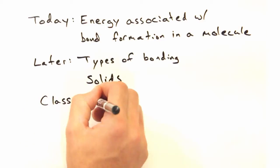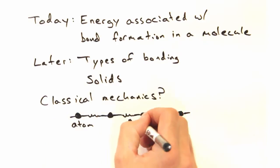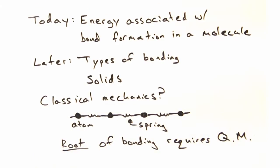So, can we get away with talking about bonding from a classical perspective? Well, we're going to treat bonds like classical springs later in class. But to really understand the root of what holds atoms together, we're going to need some quantum mechanics. Okay, I can handle a little quantum. Where do you want to start?